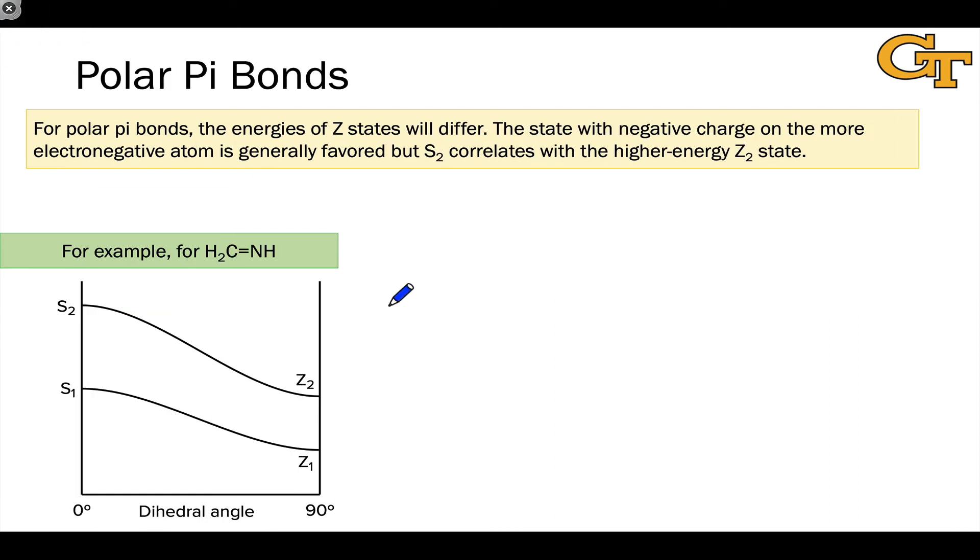When we talk about polar pi bonds, for example in an imine, a carbon-nitrogen double bond, the key difference is that the energies of the z states will differ, with the more stable z state being associated with putting the electrons in the orbital at the more electronegative atom.